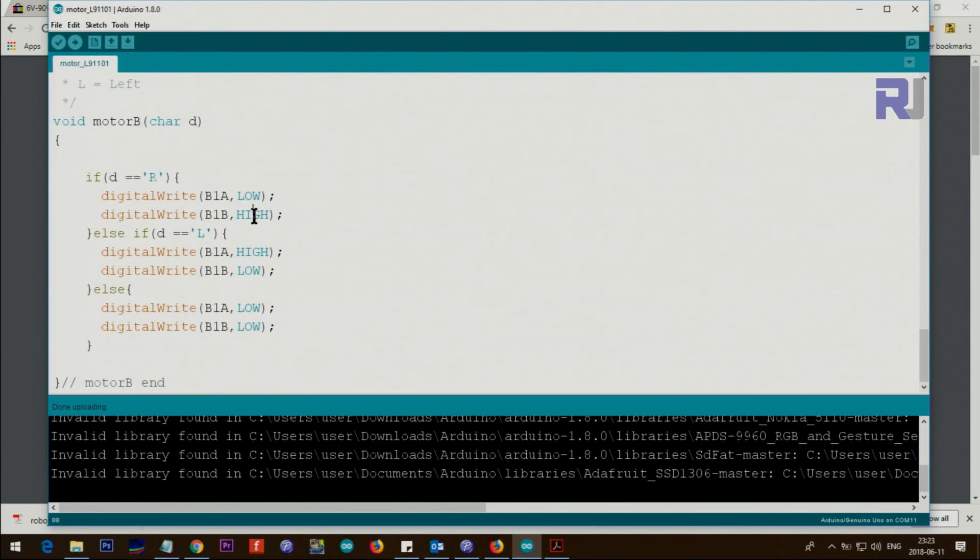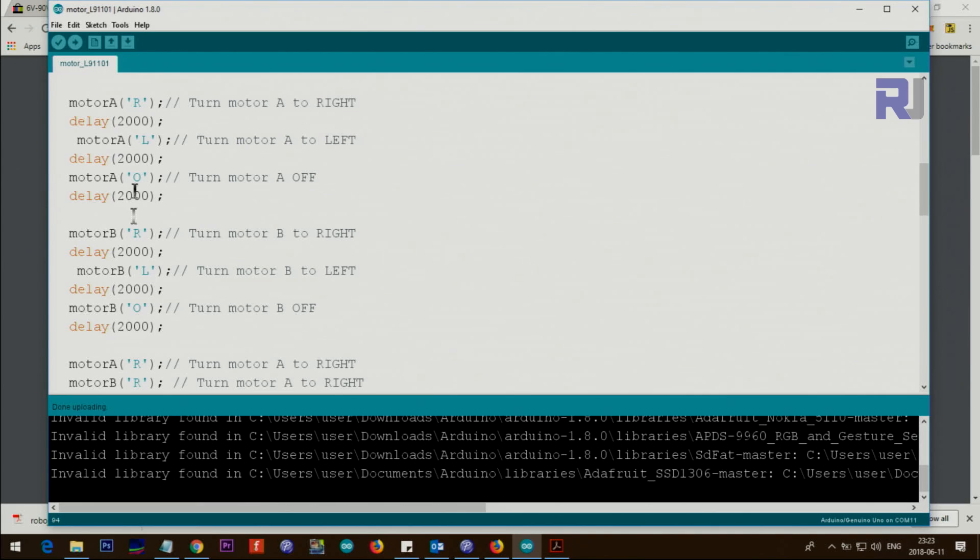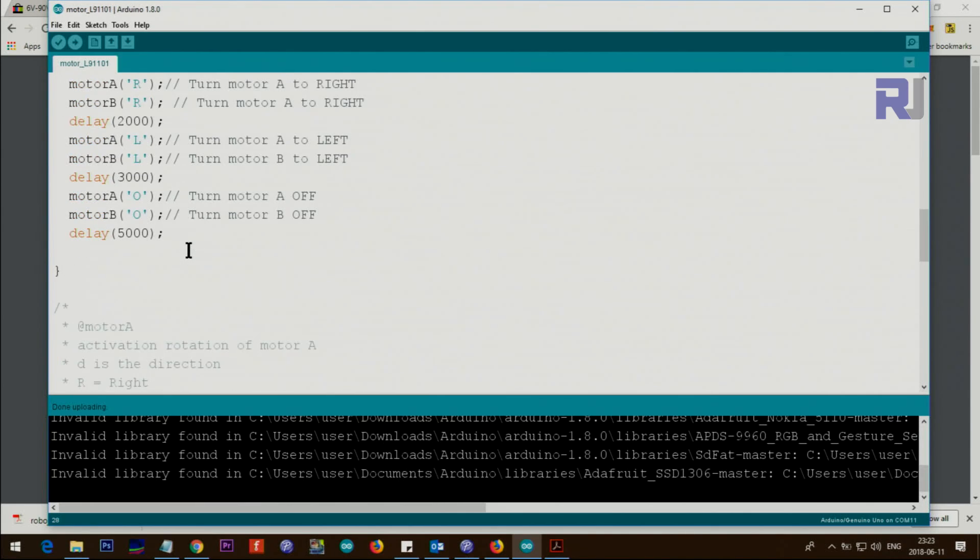One direction low and high, the other direction high and low, and low and low will stop it. So whichever way you want, you can just put here the value and make the motor rotate in the direction that you desire.